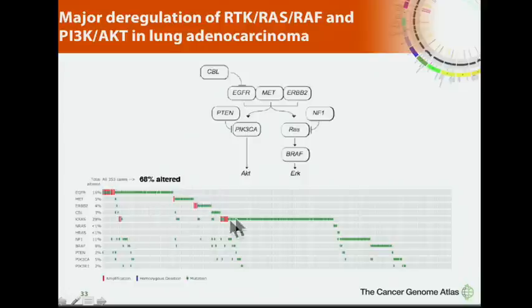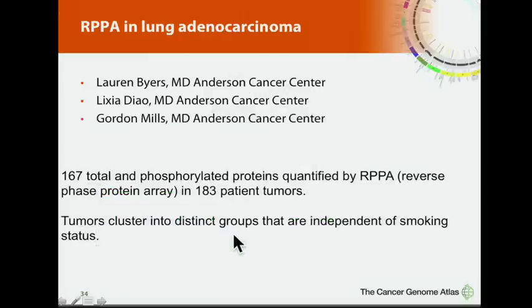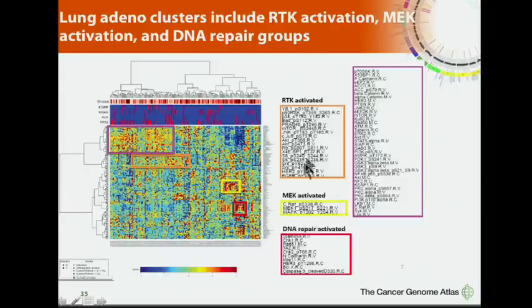In integrative cross-platform analysis, work of Chad Creighton, Eric Collison, Ron Bose, Nikki Schultz, Ted Goldstein, and Sam Ng shows significant deregulation of multiple genes in the RTK, RAS, RAF, and PI3 kinase pathways, including mutations of MET and of CTNNB1. Gordon Mills, Lauren Byers, and Lee Chedid have been doing reverse phase protein array analysis, identifying groups with strong signatures of receptor tyrosine kinase activity, MAP kinase pathway activity, and DNA repair pathway activity.